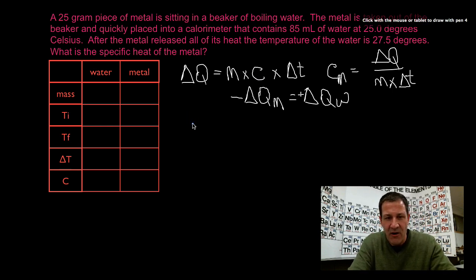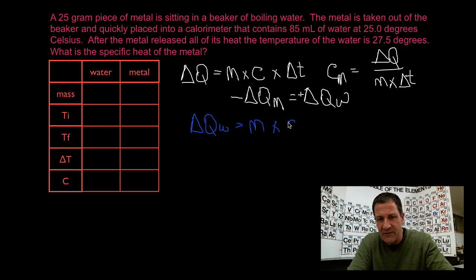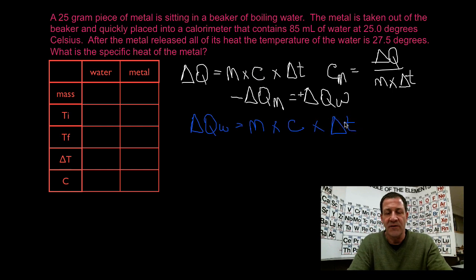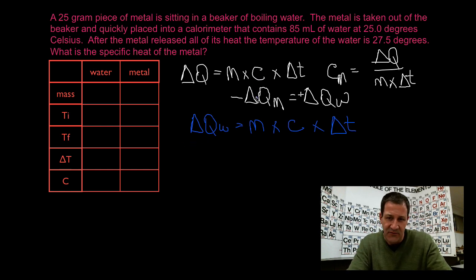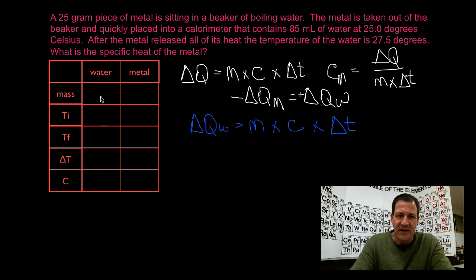Now we can calculate the change in heat of the water because we actually have all the information. The change in heat of the water is equal to the mass of the water times the specific heat of the water times the change in temperature of the water. Once we know the change in heat of the water, we can equate that to the negative of the change in heat of the metal, and then we can calculate the specific heat of the metal. Now let me make a little table with all the information we have for the metal and the water so we don't get our masses, temperatures, specific heats, and all that stuff mixed up.